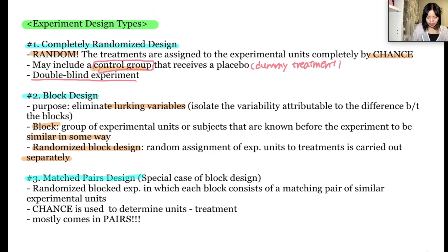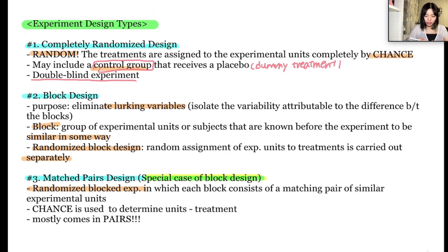Lastly, we're going to look at something called a matched pairs design — better remembered as the special case of block design. In the matched pairs design, it is a randomized block design in which each block consists of a matching pair of similar experimental units. Chance is used to determine which unit in each pair gets each treatment. The pair in a matched pairs design consists of a single unit that receives both treatments, and chance is used to determine which treatment is applied first for each unit.